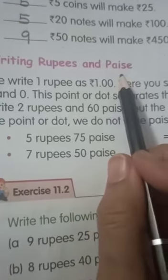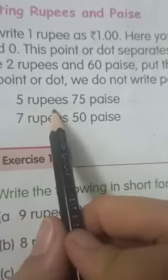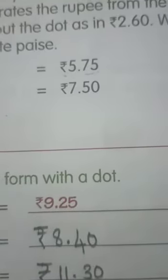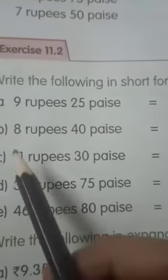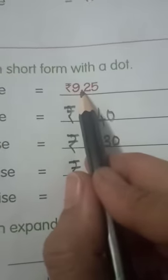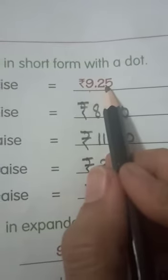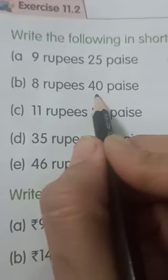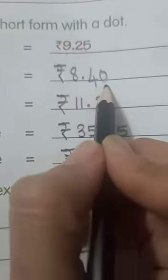Writing rupees and paise: we have 5 rupees and 75 paise. We write it in short form — this Hindi letter 'ra' represents rupees. The dot separates the rupees and paise, so it is written as 5 rupees and 75 paise. Similarly, 9 rupees and 25 paise is written with the dot separating the two. And 8 rupees and 40 paise — just put the dot between 8 and 40 and write the short form of rupees.